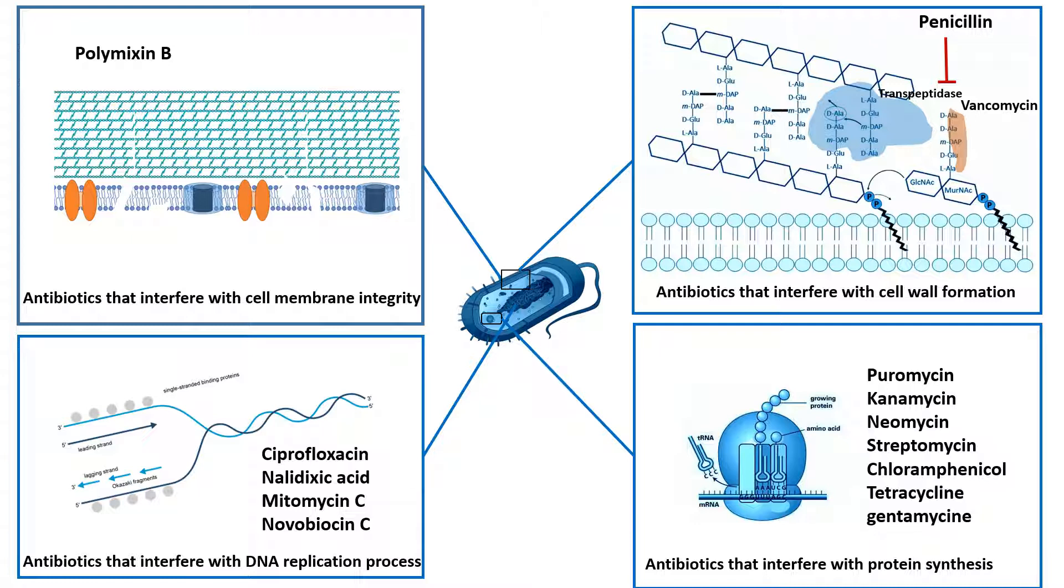And segregate that DNA properly to its daughter cell—that's how a bacteria can reproduce. But if these antibiotics interfere with this process of replication, then they can potentially harm the bacteria and can eventually kill the bacteria as well.